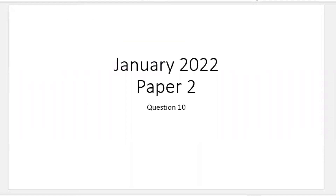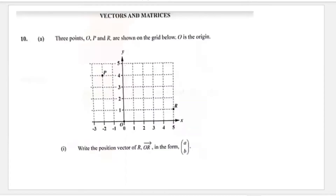Welcome back to another video. Today we'll be working on the January 2022 paper, question 10, which is the last question in this series. This question comes from the section on vectors and matrices, and it says three points O, P, and R are shown in the grid below, where O is the origin.